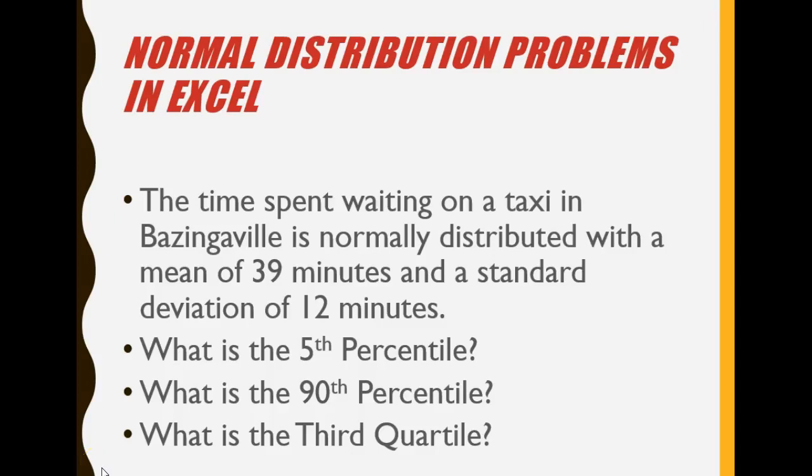Okay, let's look at another one. The time spent waiting on a taxi in Bazingaville is normally distributed with a mean of 39 minutes and a standard deviation of 12 minutes. What is the 5th percentile? What is the 90th percentile? What is the third quartile?